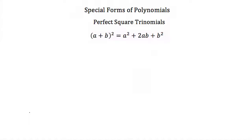There are two different types of perfect square trinomials. The first one is when we have a plus b squared, which always equals a squared plus 2ab plus b squared. We can prove this because a plus b squared is the same as a plus b times a plus b.